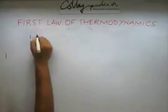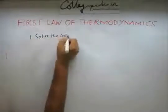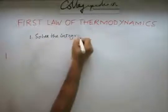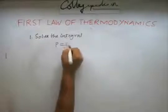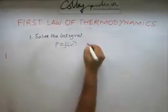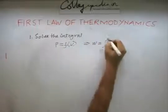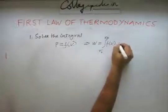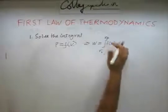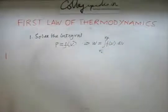So the first way of evaluating this integral is direct solving. To solve the integral, what you need to do is find P as a function of the volume, put it back in the integral, so you get W as integral Vi to Vf function of volume times dV. So this is a function of volume, this is a differential of volume, we can integrate it to get what is the network done between Vi and Vf. This is one way of doing it.